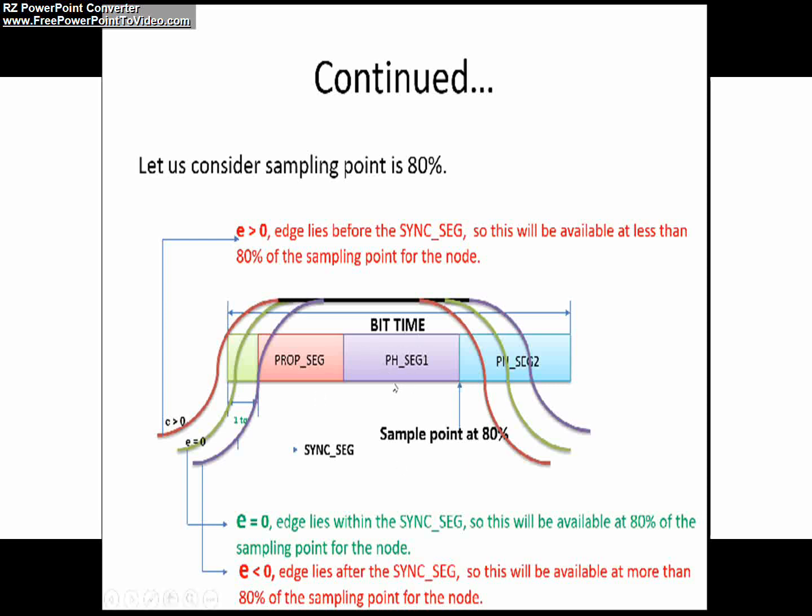For previous we have seen the end, now what receiver will do: receiver will shorten the phase buffer segment 2 in order to interpret the incoming bit properly. Therefore here the edge phase error E less than zero. I hope you all understood this.